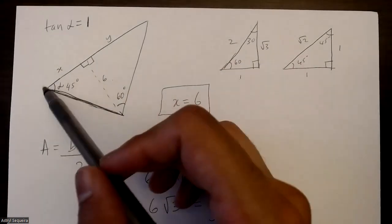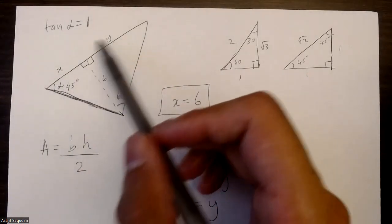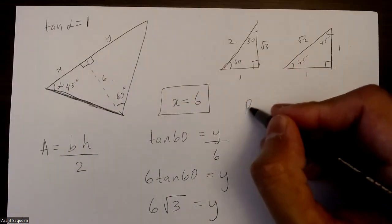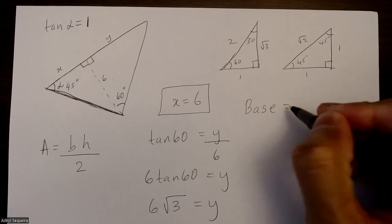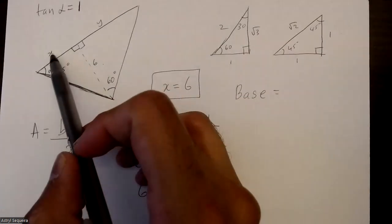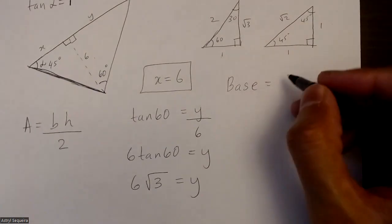So now to get the base of my triangle, I just have to add x and y. So my base is just going to be 6 plus 6√3.